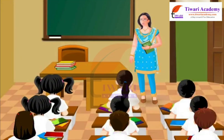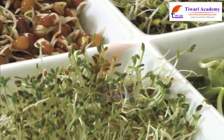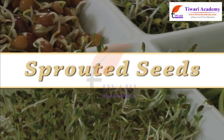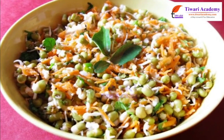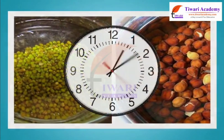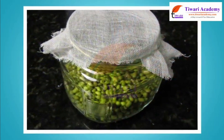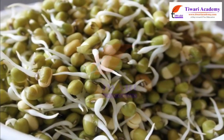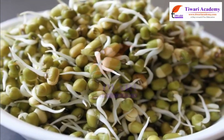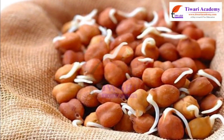Sprouted seeds: We can also eat some seeds when they germinate. Sprouting is the practice of germinating seeds to be eaten raw or cooked. They are a prominent ingredient of the raw food diet. Seeds of moong or chana are soaked in water and left for a day. Next day, water is drained and seeds are wrapped in a wet cloth for about 10 to 12 hours or overnight. When a small white structure grows out of the seeds, we say the seeds are sprouted. After washing these sprouted seeds, you can eat them. They can also be boiled. Gram seeds take a little longer time to germinate.